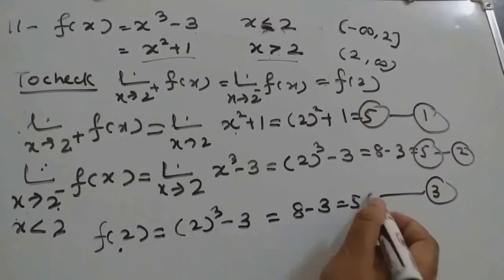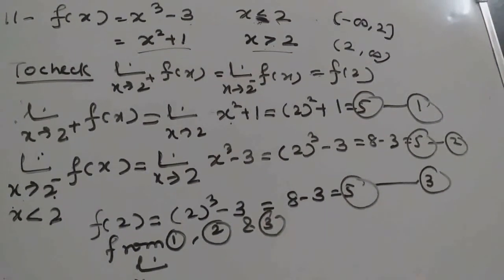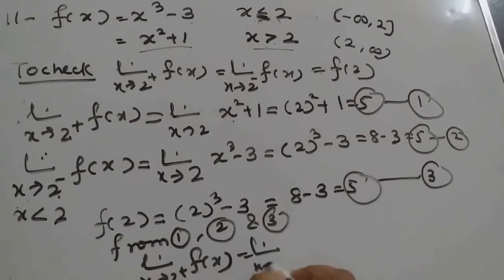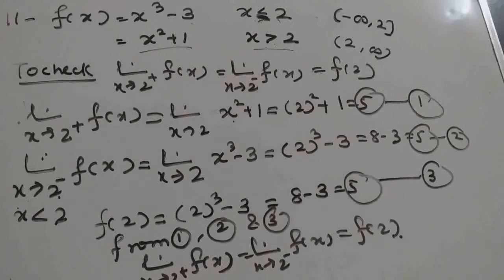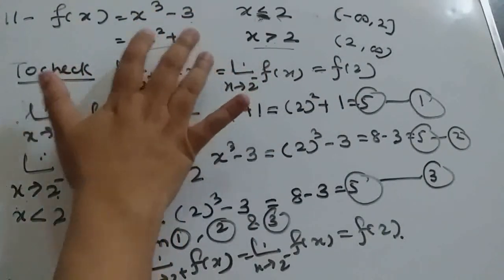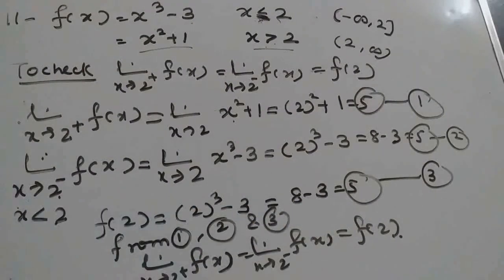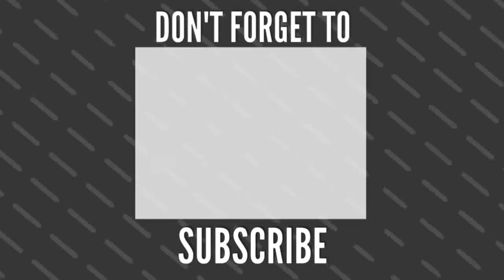All three values are equal. From equations 1, 2, and 3: limit x tends to 2 plus f(x) equals limit x tends to 2 minus f(x) equals f(2). That means the function is continuous at x = 2. So these two functions are separately continuous on their domains as polynomials, and they are also continuous at x = 2. Therefore, the function is continuous everywhere — there is no point of discontinuity.